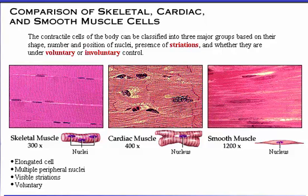Skeletal muscle has elongated cells with multiple peripheral nuclei. Notice the striations — the light and dark bands — in the photomicrograph. Later we will explore the details of this banding pattern. Skeletal muscle cells are under voluntary control.